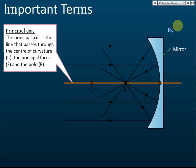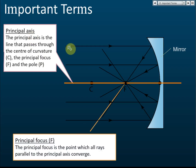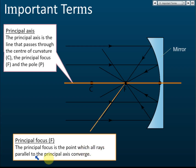If a light ray is parallel to the principal axis, you will find that the ray is always focused at one point. All light rays parallel to the principal axis converge at the same point on the principal axis, and this point is called the principal focus.